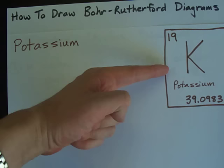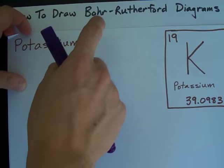Bohr-Rutherford Diagrams, example number two, potassium. Element number 19.